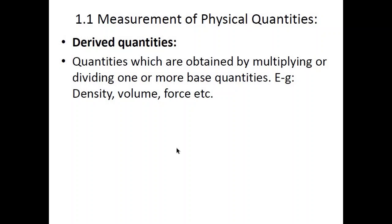The base quantities are followed by derived quantities — quantities obtained by multiplying or dividing one or more base quantities. For example, multiplying length three times gives volume. Similarly, density, force, and acceleration are derived quantities because they are calculated mathematically from one or more base quantities.